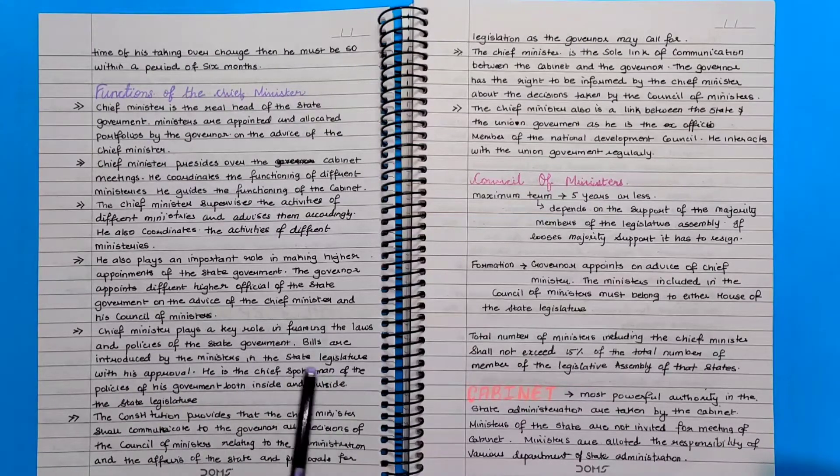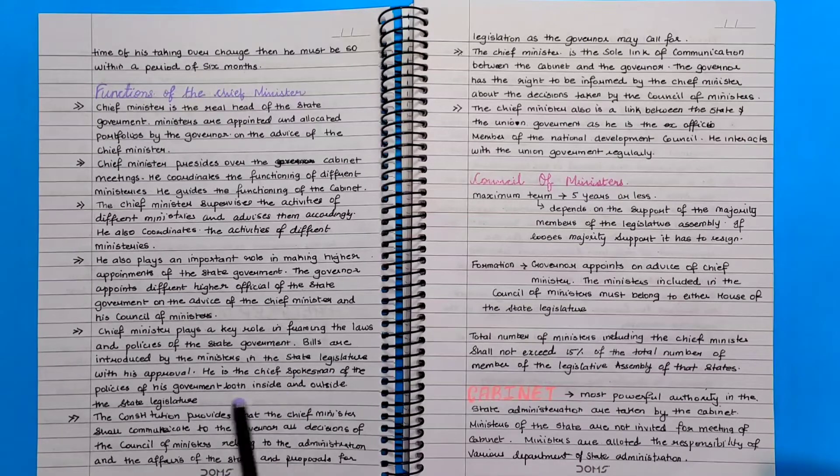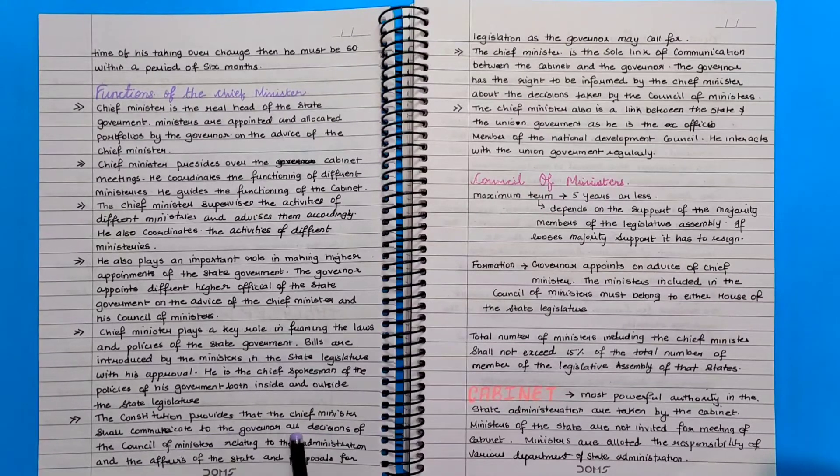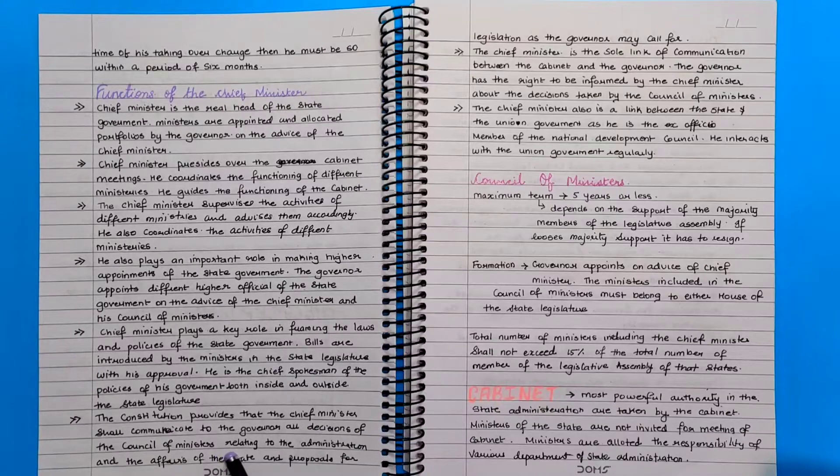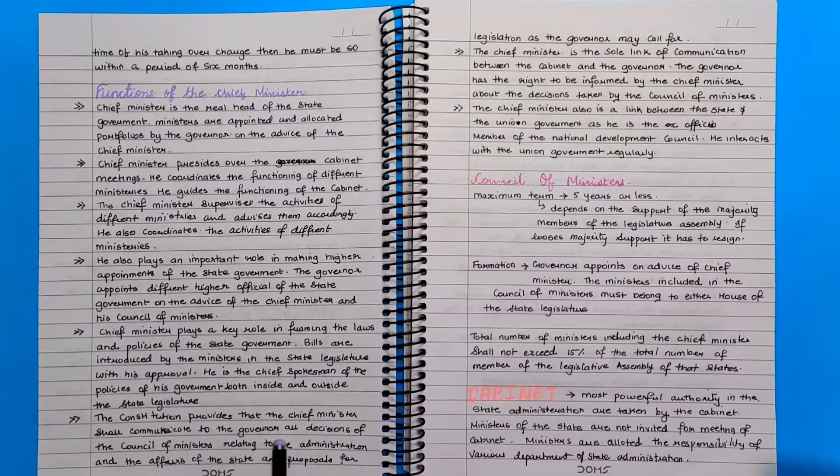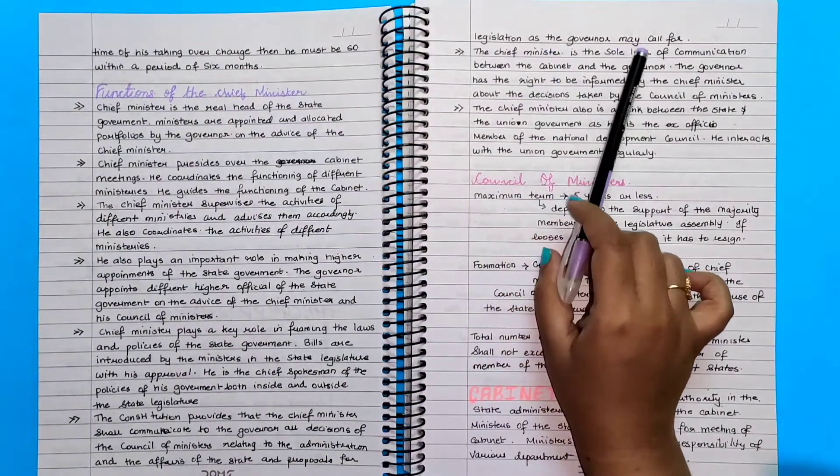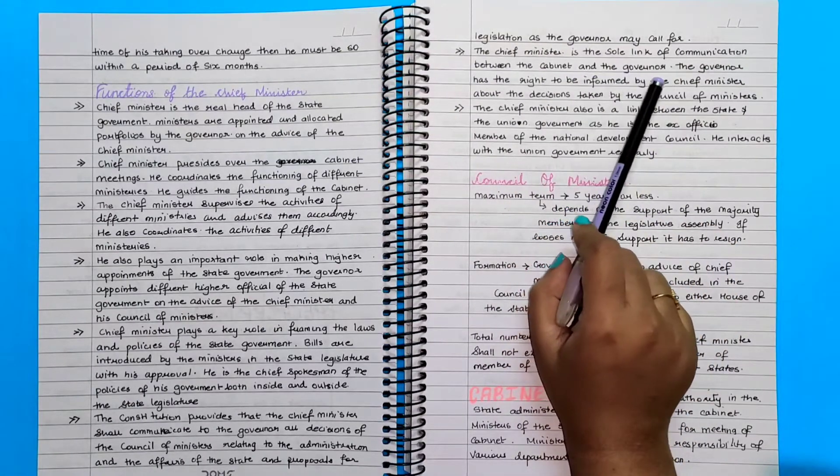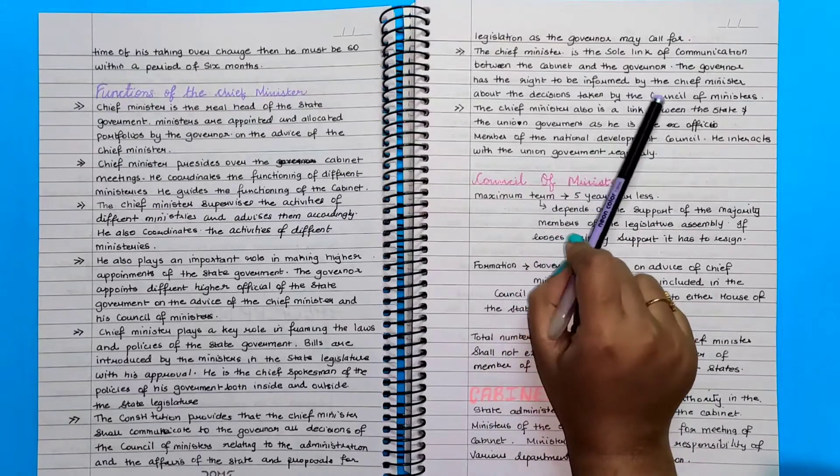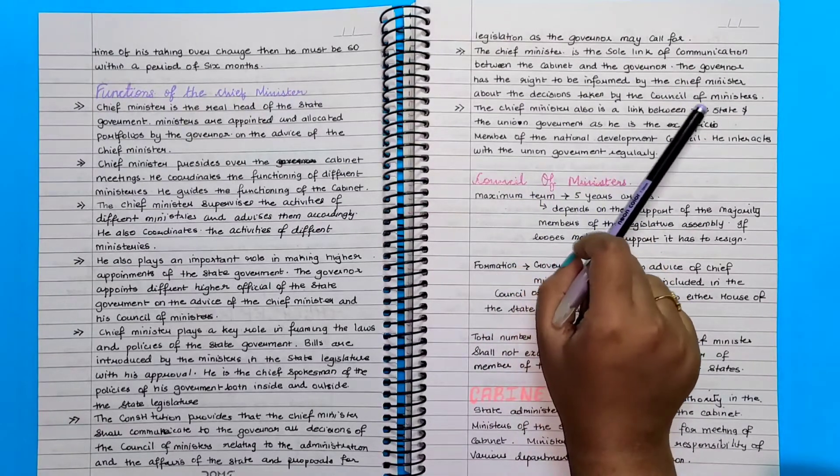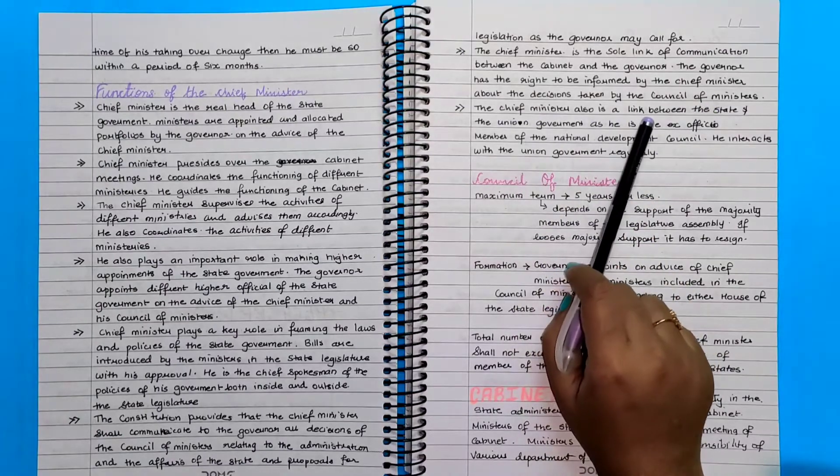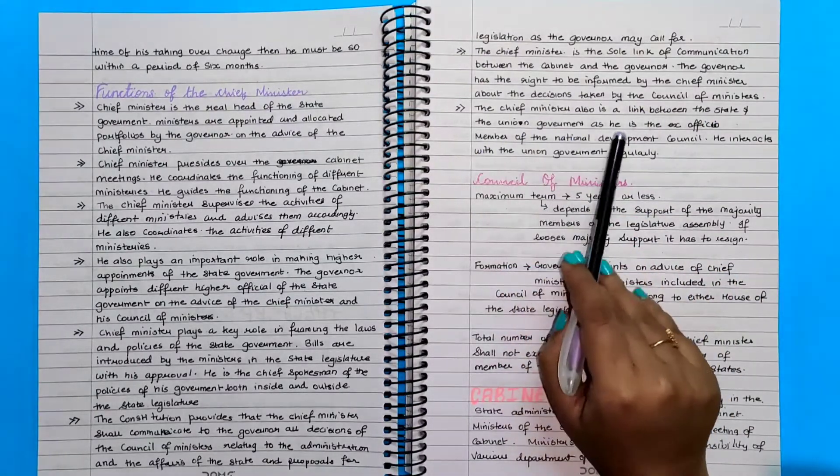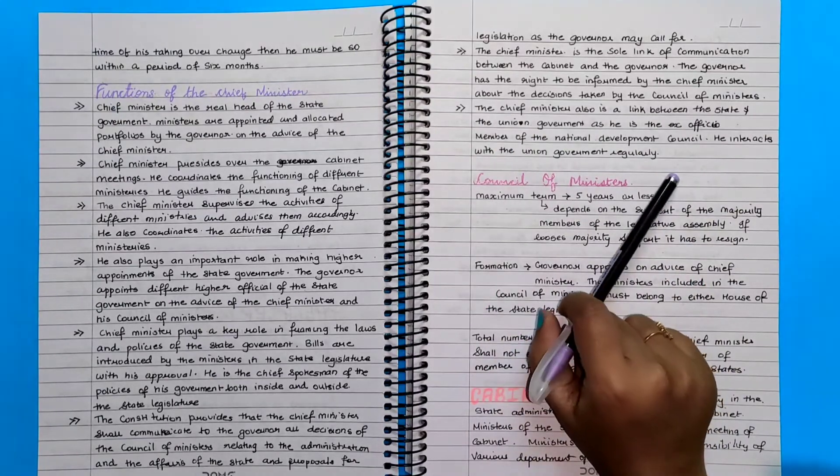He is the chief spokesman of the policies of his government both inside and outside the state legislature. The constitution provides that the chief minister shall communicate to the governor all the decisions of the council of ministers relating to the administration and the affairs of the state and proposals for legislation as the governor may call for. The chief minister is the sole link of communication between the cabinet and the governor. The governor has the right to be informed by the chief minister about the decisions taken by the council of ministers. The chief minister also is a link between the state and the union government as he is the ex-officio member of the National Development Council. He interacts with the union government regularly.